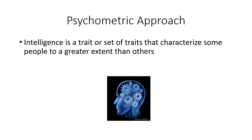Just like how trait theory basically defined personality, the psychometric approach defines intelligence — it's the main approach that looks at intelligence. The psychometric approach is interested in measuring or quantifying something. For intelligence, it's going to be a trait or a set of traits that characterizes some people to a greater extent than others within the domains of learning and problem solving. It has to be something we can measure to a greater or lesser extent from one individual to another.